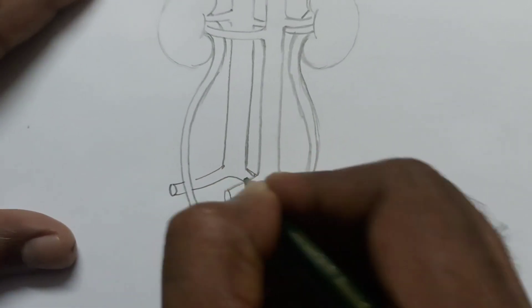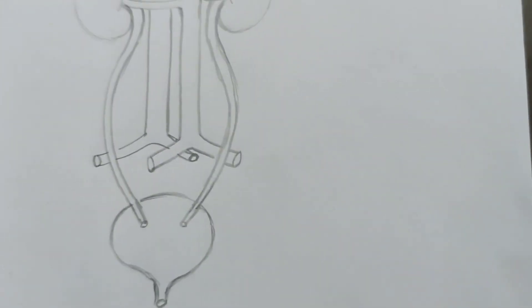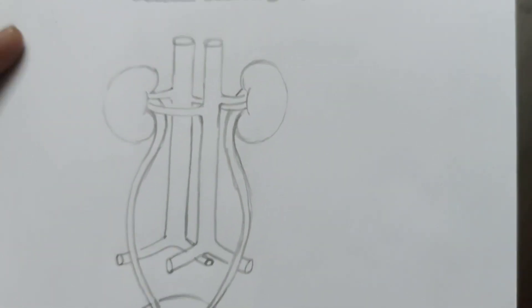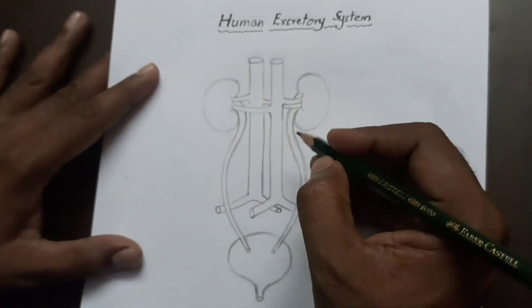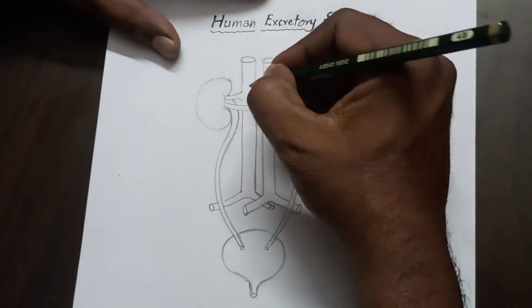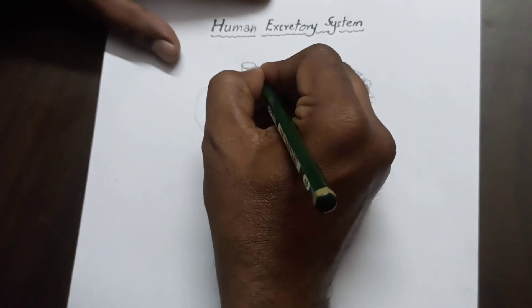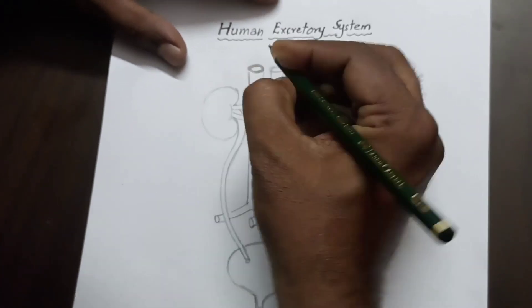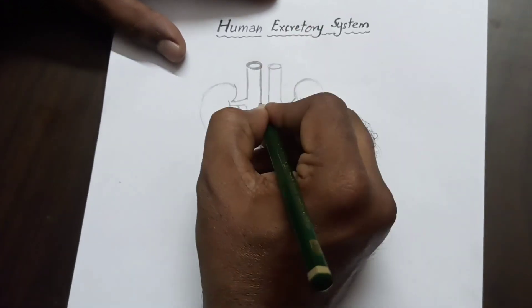Good. Almost the excretory system is completed. We have to draw adrenal glands above the kidneys.